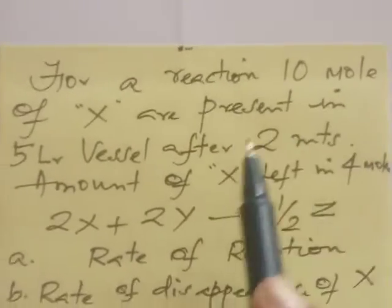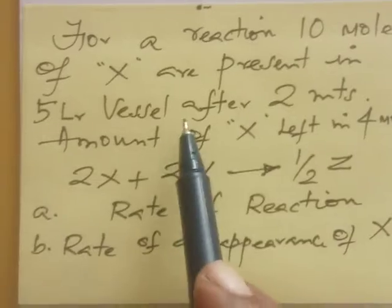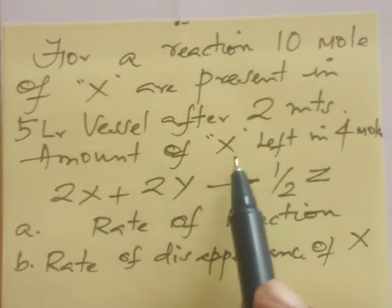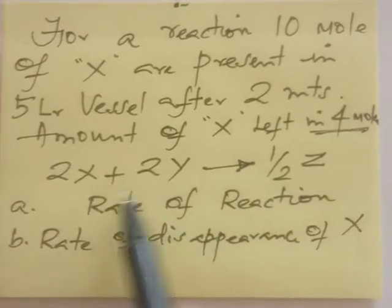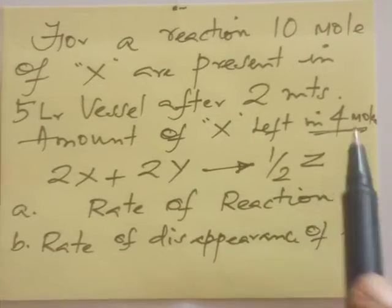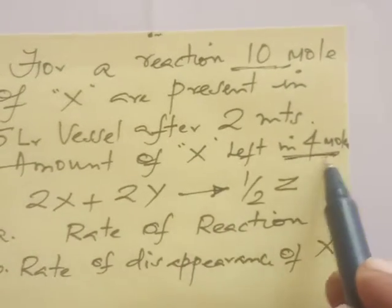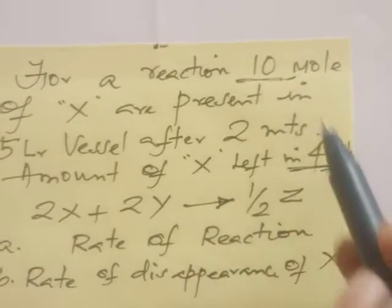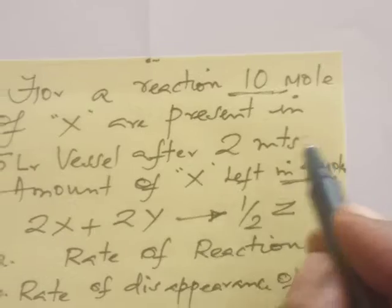For the next problem: 10 mol of X was present in a 5 liter vessel. After 2 minutes, the amount of X left is 4 mol. The same questions are asked. The difference in this problem is that the initial amount is 10 mol and the final amount is 4 mol. So you have to find the difference in the moles consumed.